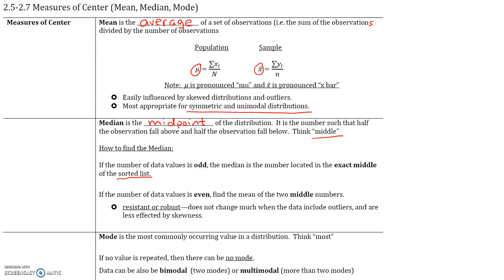Mode is simply the most commonly occurring value in the distribution. Think most. If no value is repeated, then there can be no mode. Data can also be bimodal if there are two modes or multimodal if there are more than two modes.